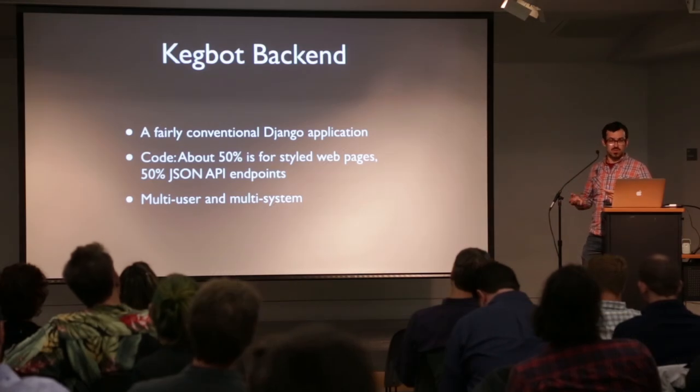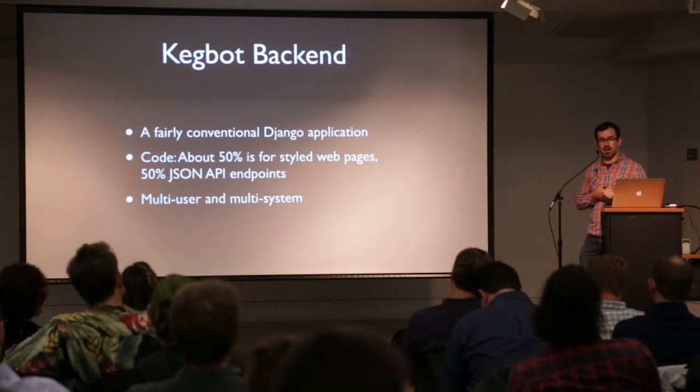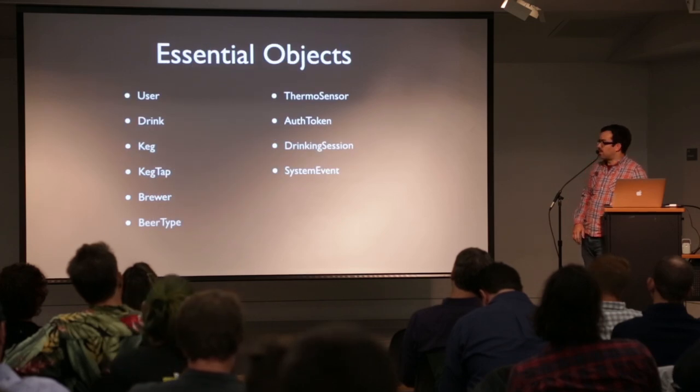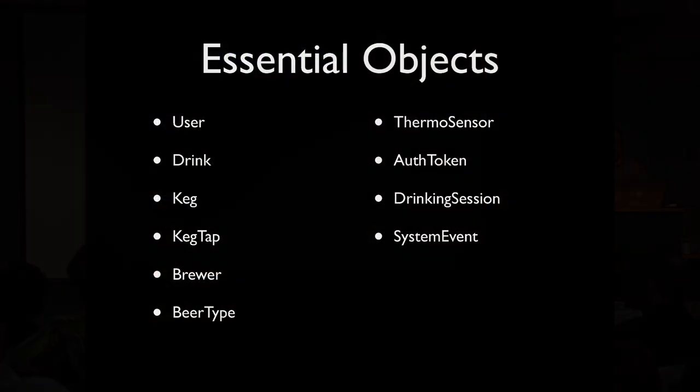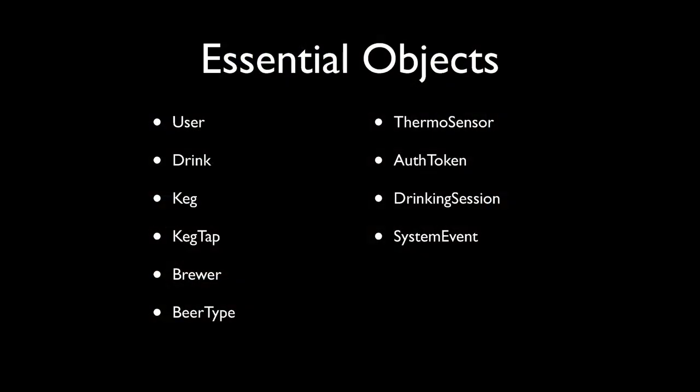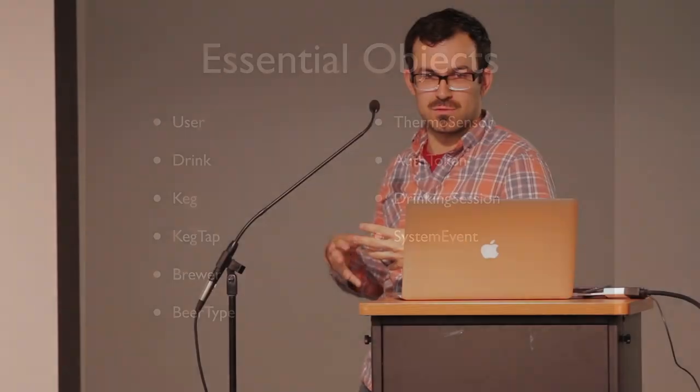The backend is a pretty conventional Django application. It's about 50% styled web pages — the interface you log into at demo.kegbot.org — and the other half services the API that the tablet app needs. It supports multiple users, multiple taps, whether you have a single system or a large fleet. The essential concepts are users, drinks, and kegs. One thing the system does is group drinks into a session — if you go about 90 minutes to three hours without pouring, the session ends.